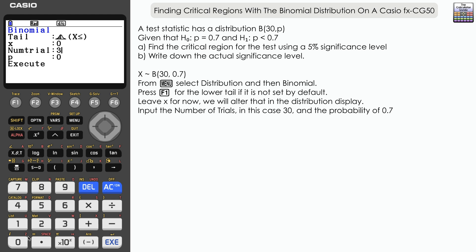So we'll leave that for now. The number of trials was 30 and the p we're going to assume is 0.7, and then execute to confirm.